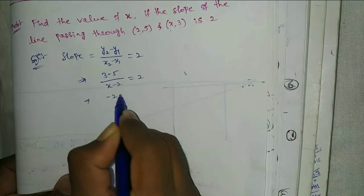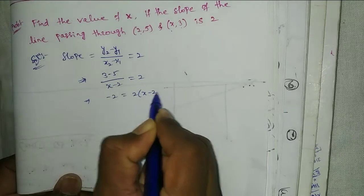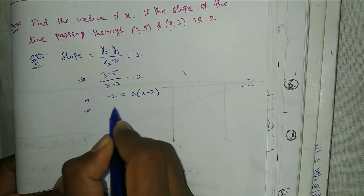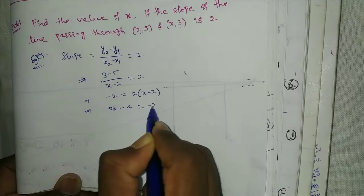See here minus 2, that equals 2 into x minus 2. That implies 2x minus 4 equal to minus 2.